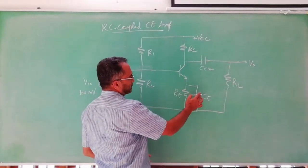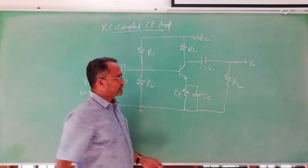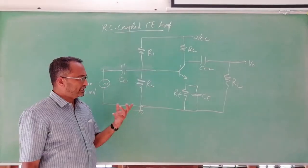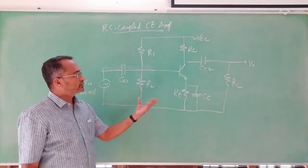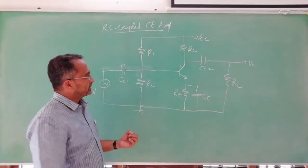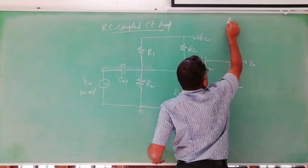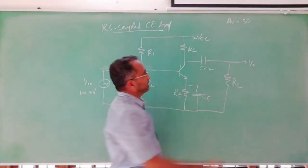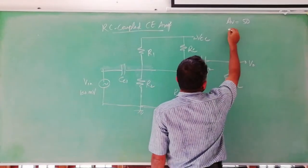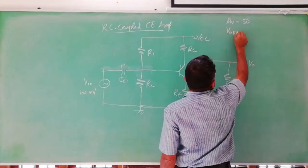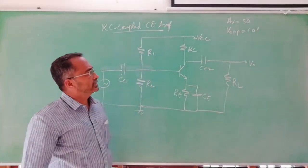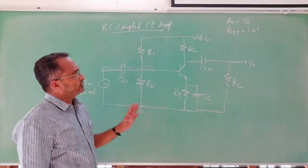This will bypass this resistance. Here first we should have certain objective for the design and practice. Our objective is this: the gain AV should be 50, voltage gain should be 50 and approximately the VO output peak to peak voltage is 10V. So gain should be 50.